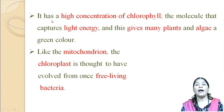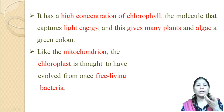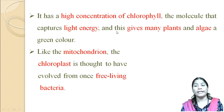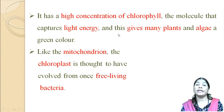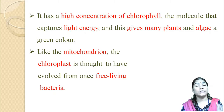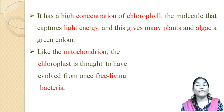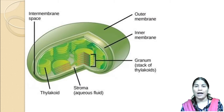Chloroplasts have a high concentration of chlorophyll — the molecule which captures light energy — and this gives many plants and algae their green color. Like the mitochondria, the chloroplast is also evolved from free-living bacteria.